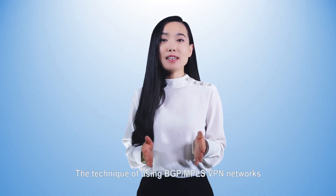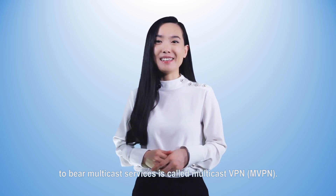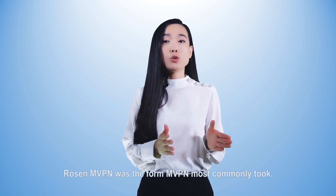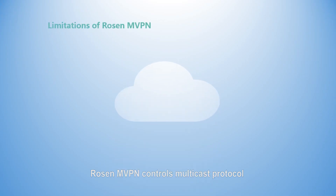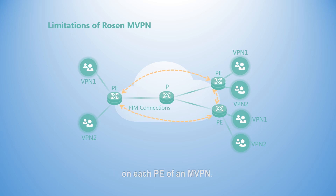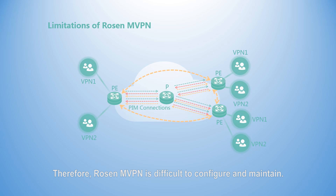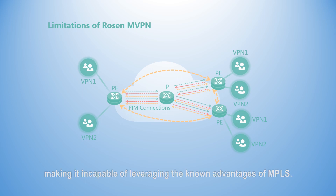The technique of using BGP or MPLS VPN networks to bear multicast services is called multicast VPN. Early on in its deployment, RosenMVPN was the form MVPN most commonly took. RosenMVPN controls multicast protocol and data packet forwarding by using PIM on the public network and by setting up a dedicated full mesh multicast distribution tree on each PE of an MVPN. Therefore, RosenMVPN is difficult to configure and maintain. RosenMVPN uses GRE to encapsulate multicast data and can therefore use only GRE tunnels to transmit the data, making it incapable of leveraging the known advantages of MPLS.